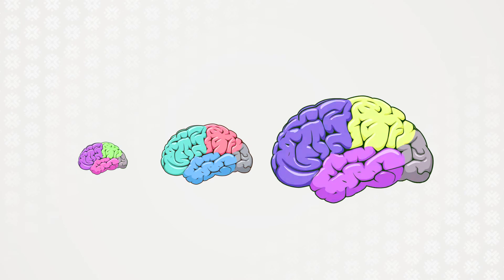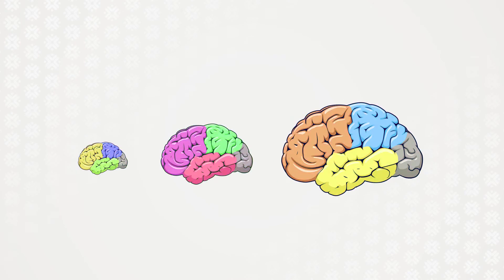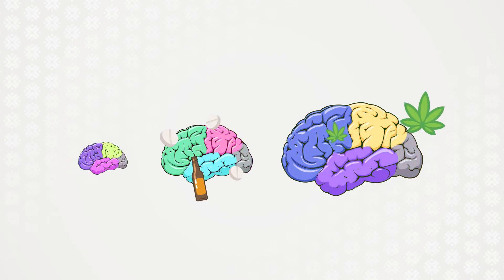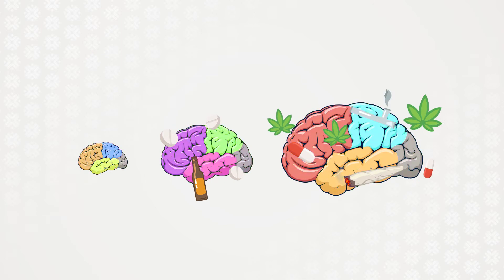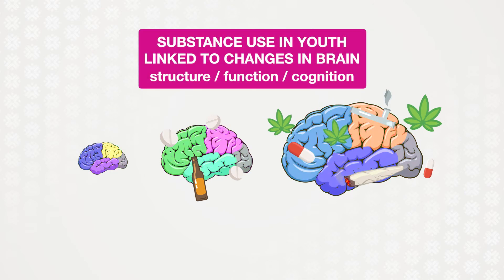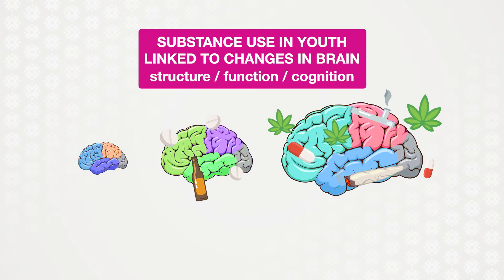Critical brain development occurs during adolescence, making youth particularly vulnerable to the short and long-term effects of alcohol and other substances. Substance use in youth has been linked to changes in brain structure, function, and cognition. These changes can have immediate and long-term negative impacts on factors such as academic performance and social functioning, and these impacts can extend into adulthood.